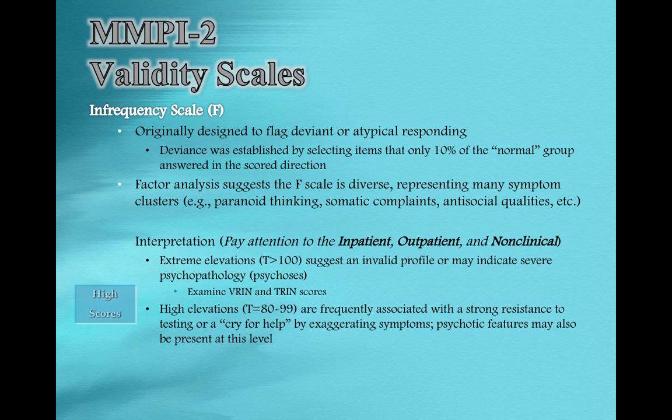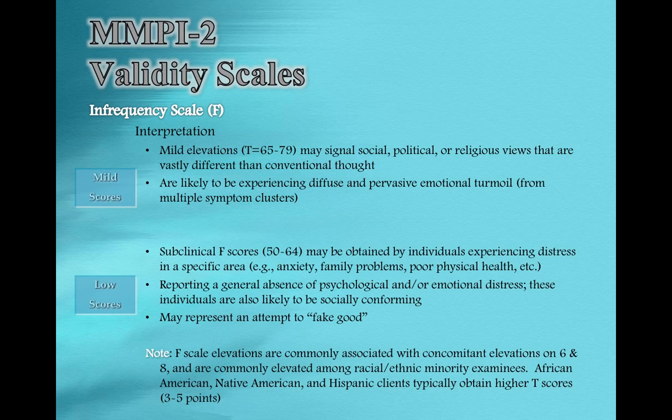The F scale looks for individuals who are responding to items in a more atypical or deviant pattern. These are items that only 10% of the normal population would answer in a particular direction. If you find yourself with a high F value, that puts you in a very small group and becomes a concern. The F scale may represent things like paranoid thinking, antisocial behavior, or significant somatic complaints. So could you have an elevated F if a client has real health problems? Sure. All these validity scales get interpreted in light of a good client history.